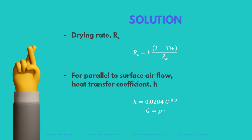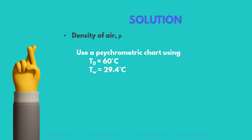The rate of drying can be calculated by multiplying the heat transfer coefficient by the difference in temperature between the air and the solid surface, divided by the latent heat of vaporization. For the heat transfer coefficient of air flowing parallel to the surface, H is equal to 0.0204 times the mass flux raised to 0.8. This mass flux can be calculated by multiplying the density of air times the velocity. To find the density of air, we use a psychrometric chart to look for the specific volume of air using the given dry and wet bulb temperatures.